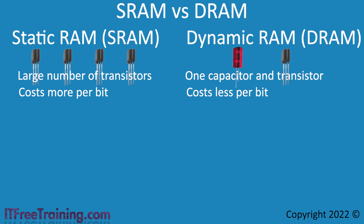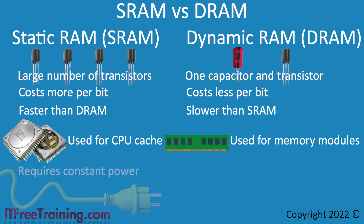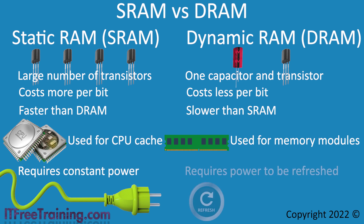If cost was the only concern, then you would always use DRAM. However, SRAM is faster than DRAM, meaning there is a trade-off between cost and performance. Generally, SRAM is used in the CPU for cache, because only a small amount of RAM is required and it needs to be as fast as possible. In contrast, DRAM is used for memory modules — although SRAM could be used, its much higher cost means DRAM is commonly used instead. The last difference is that SRAM needs constant power to operate, whereas DRAM requires periodic power in the form of a refresh. While the refresh is occurring, the DRAM cannot be read or written to. This is one of the reasons why DRAM is typically slower than SRAM.